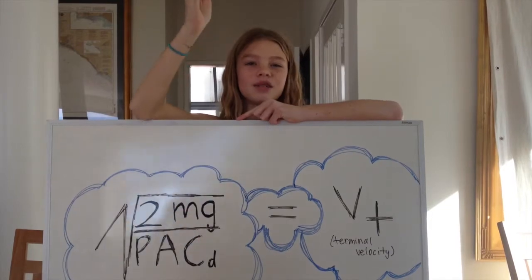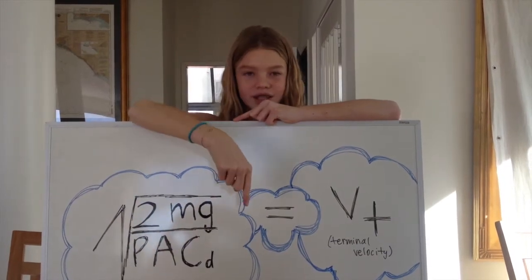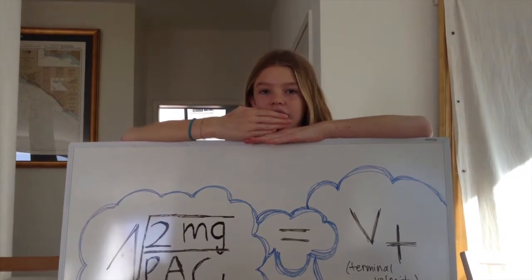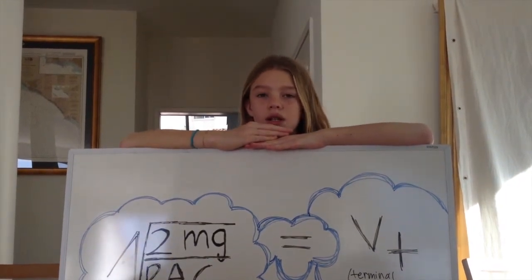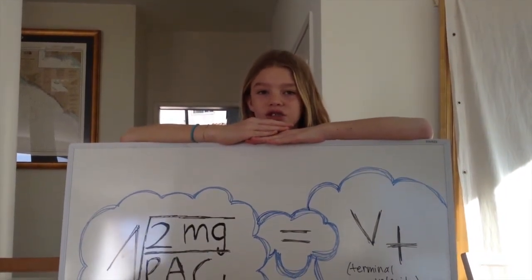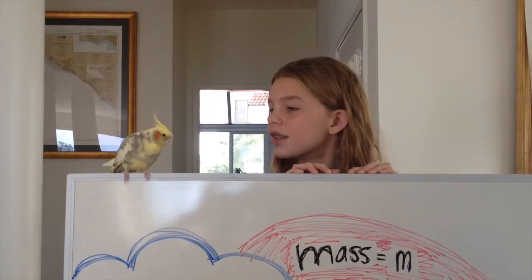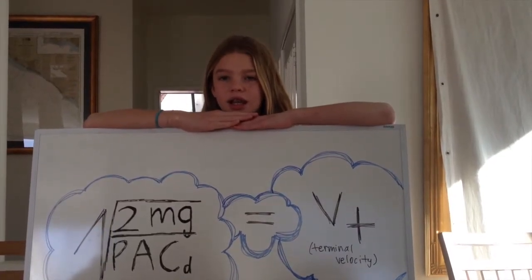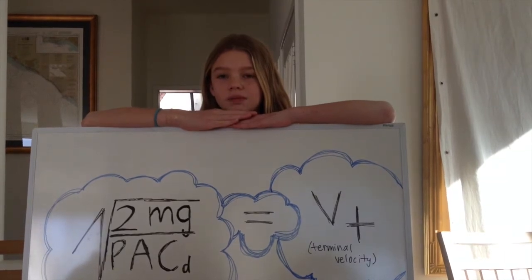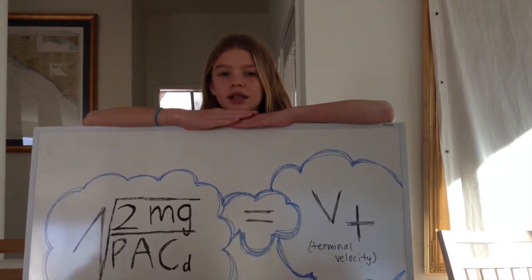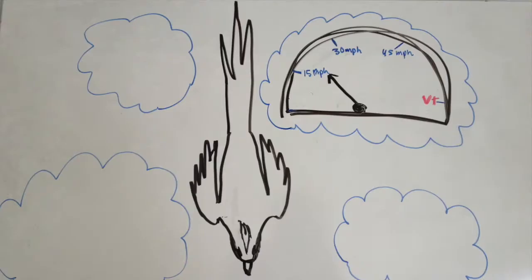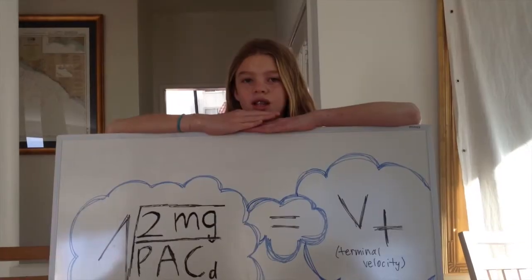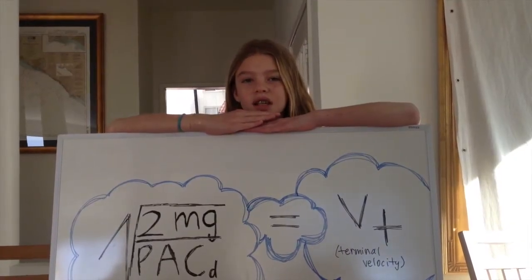We need to begin with the physics of flight. The faster something goes, the more wind resistance it encounters. We call this wind resistance drag. Eventually it will reach a certain speed and it cannot go faster than that because it will have too much drag.